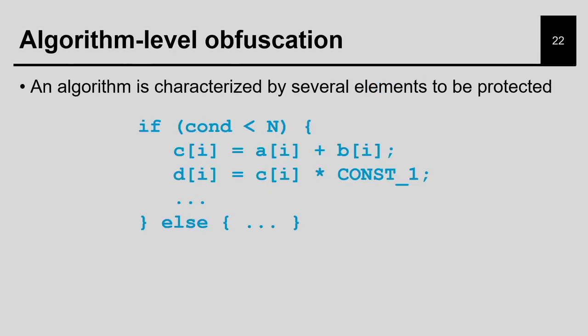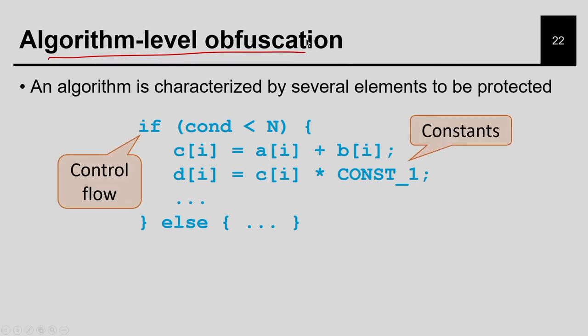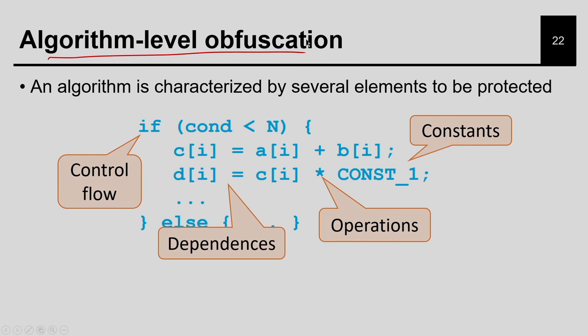Once you have the RTL it will just go through the complete flow and the layout will be locked. This is what is called algorithm-level operation because I am going to do it specifically during high level synthesis. What are the things we can lock? The first thing is constants - a constant has a fixed value say 5, and I can lock this value so that another employee who does not know what is the correct key value cannot determine it.